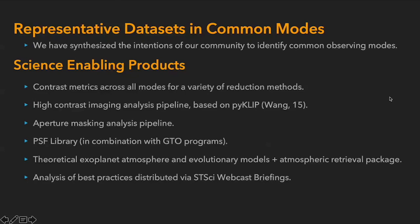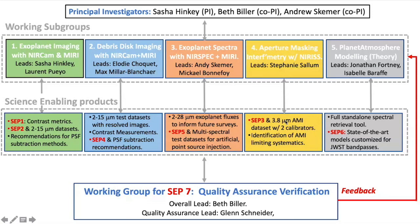We're also going to be delivering a set of science enabling products. The most obvious are representative datasets that will be widely available. We spent a couple of years synthesizing the intentions of our community to identify common observing modes. In terms of actual products, we're going to deliver basic contrast metrics — that is, the performance of the observatory across as many modes as possible for a variety of post-processing methods — as well as high contrast imaging pipelines based on Python tools.